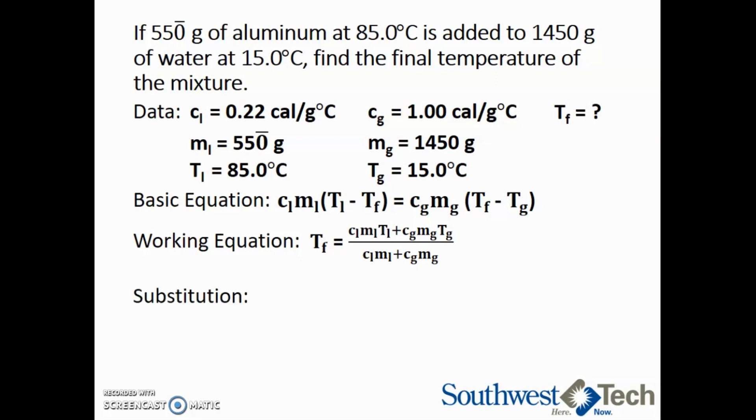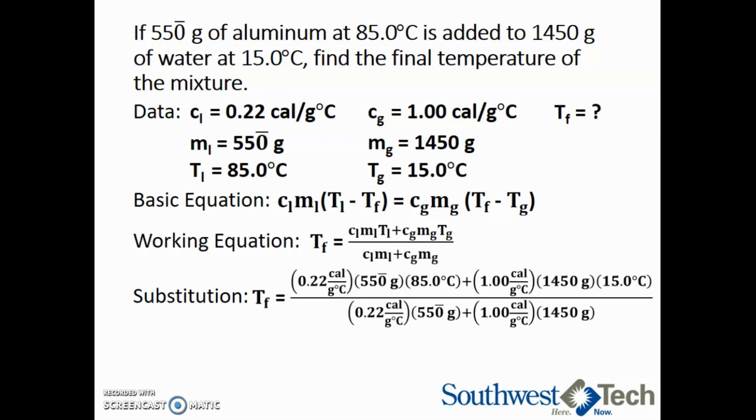Our next step is to substitute in all of the values we are given. Be very careful on this step as it is really easy to enter it incorrectly into a calculator. 0.22 calories per gram degree Celsius times 550 grams times 85 degrees Celsius plus 1 calorie per gram degree Celsius times 1450 grams multiplied by 15 degrees Celsius.